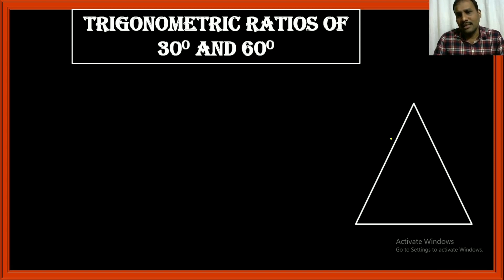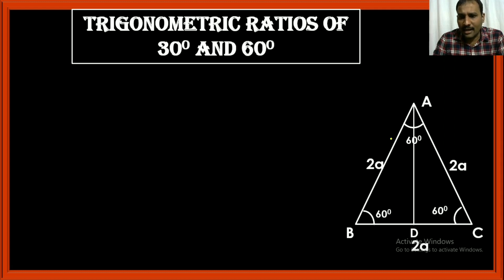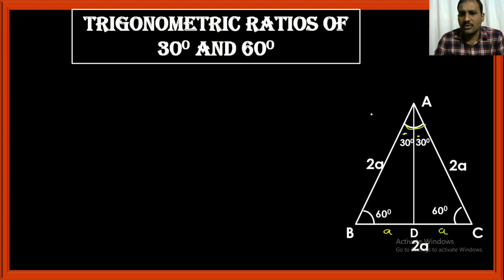For this, consider an equilateral triangle ABC. We know that all the angles in the equilateral triangle are 60 degrees, and let the sides of the triangle be 2a, 2a, and 2a. Now draw the angle bisector of angle A, that is AD. This AD also divides the base into two equal parts, so BD becomes a and DC also a, and these angles become 30 degrees and 30 degrees.